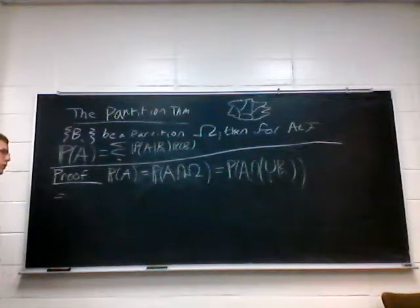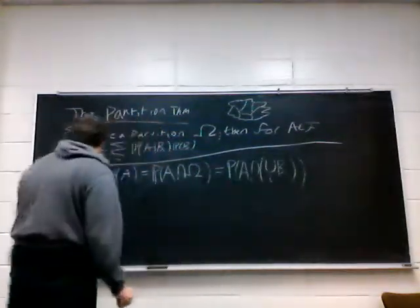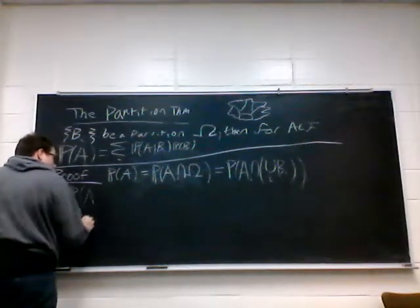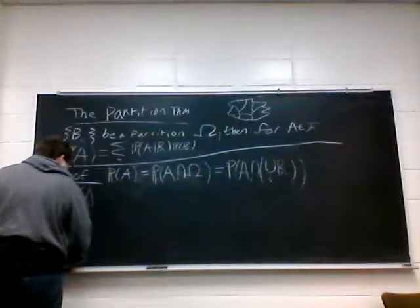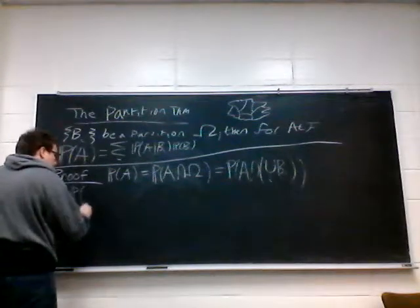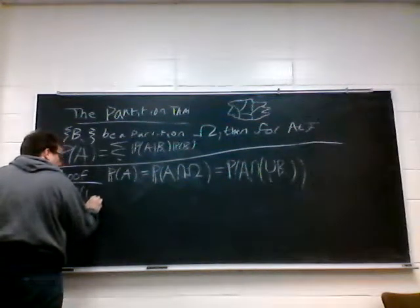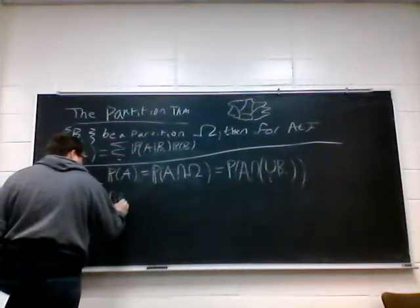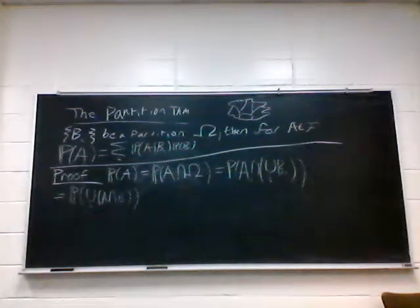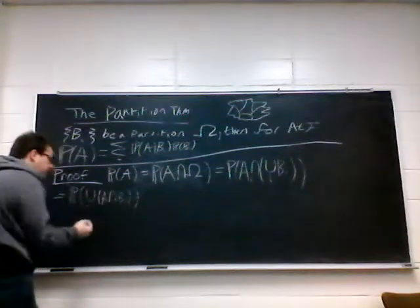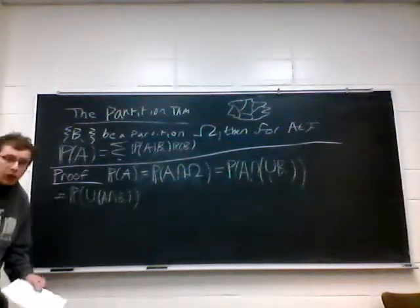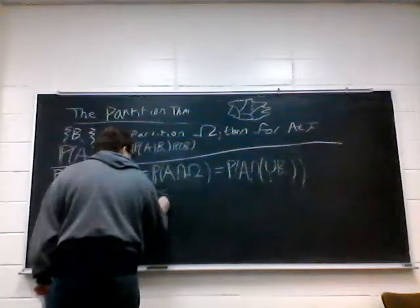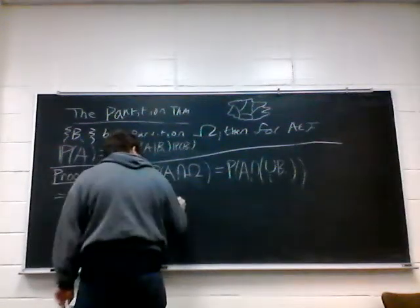Now, because you can distribute the intersection, this becomes the probability of the union of the events (A intersect V_i). All the V_i's are disjoint, therefore the (A intersect V_i)'s are disjoint events. So when we have the union of disjoint events, we can write it as the sum of the individual probabilities.